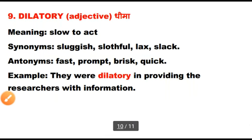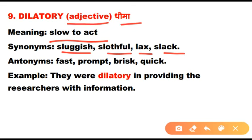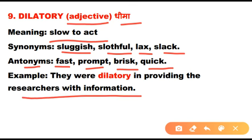Number nine is dilatory. Dilatory is an adjective meaning slow to act. Synonyms: sluggish, slothful, lax, slack. Antonyms: fast, prompt, brisk, quick. Example: They were dilatory in providing the researchers with information — meaning they were late and slow in giving the information.